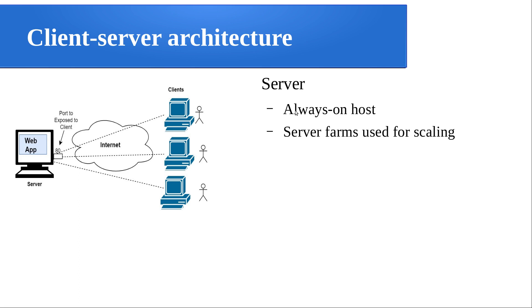The server is an always-on host — whenever there is a request from the client, the server is supposed to answer it. Server farms can be used for scaling, because as it is a single server it has to handle all requests from all clients. So instead of that, if you think of more than one server — making something called a server farm — that will make the system work in a better way. That is how we can scale the client-server architecture.